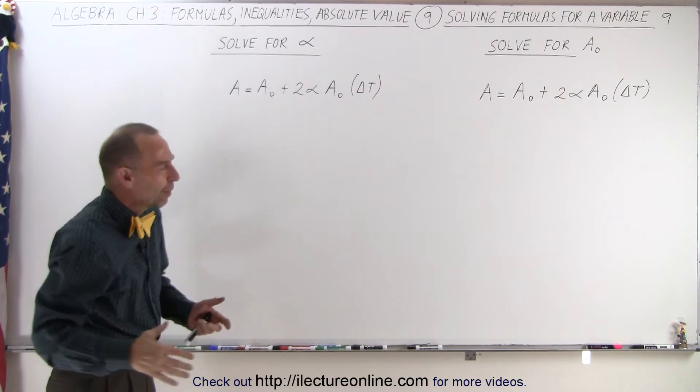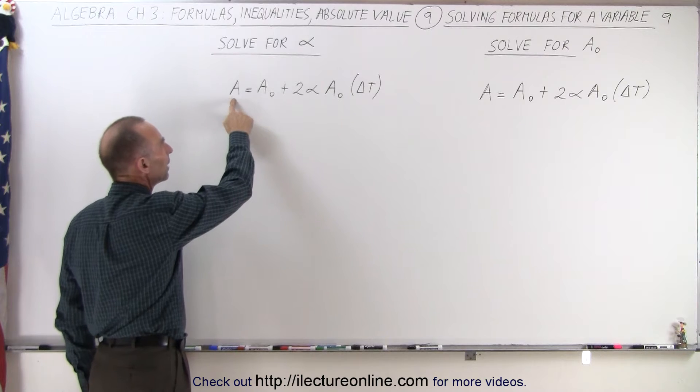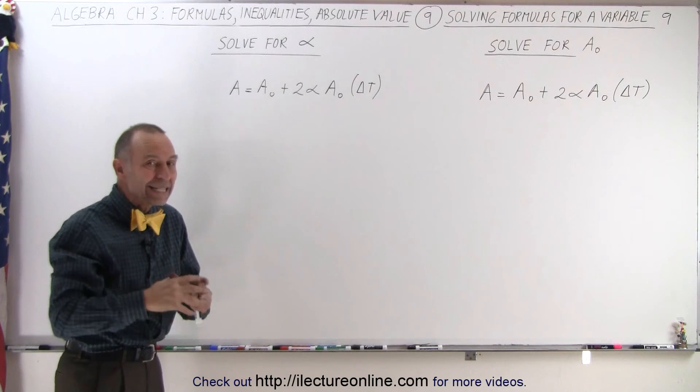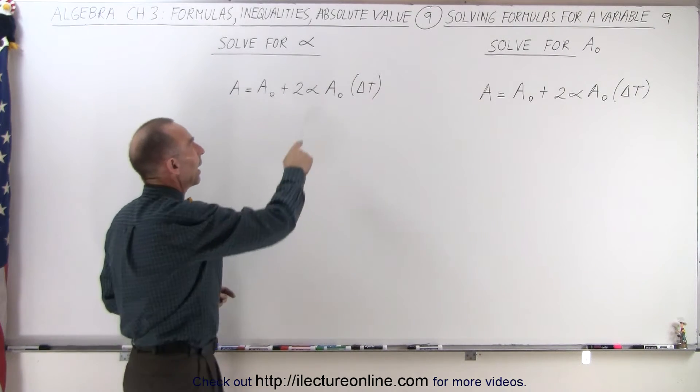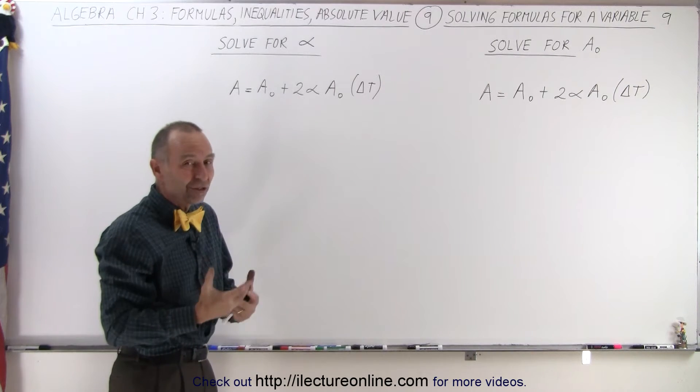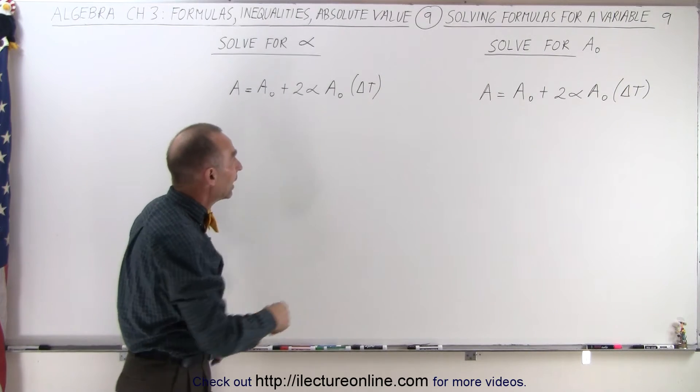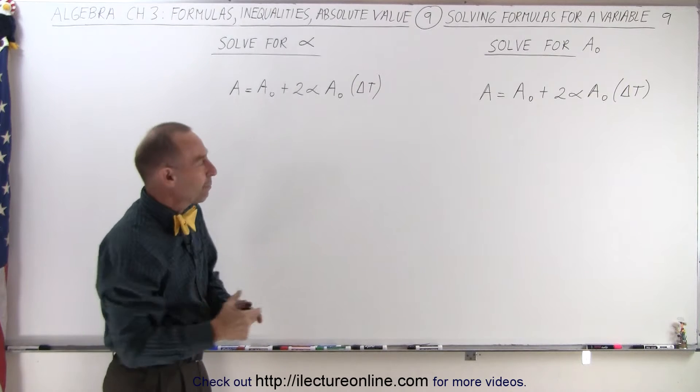What do those symbols represent? A represents area. A sub nought represents the initial area. Alpha represents the coefficient of thermal expansion and delta T represents a change in temperature.